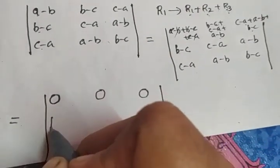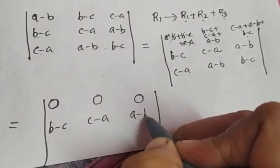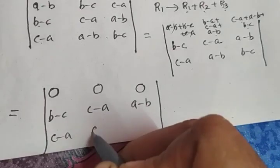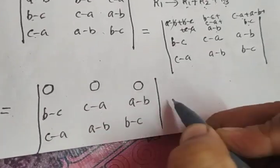The second row remains the same: B minus C, C minus A, A minus B. The third row remains: C minus A, A minus B, B minus C.